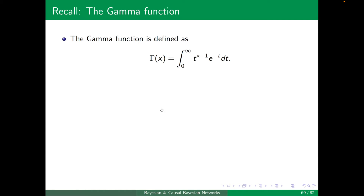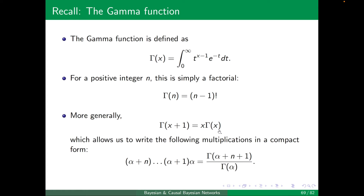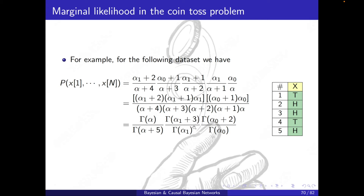Recall the gamma function: for a positive integer n, gamma(n) equals (n-1) factorial. The key property is gamma(x+1) = x * gamma(x). This allows us to write multiplications like alpha * (alpha+1) * ... * (alpha+n) as gamma(alpha + n + 1) divided by gamma(alpha).